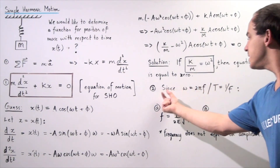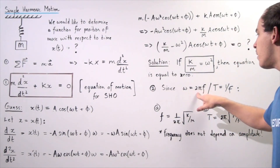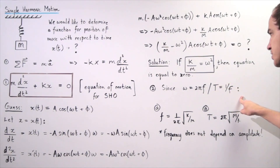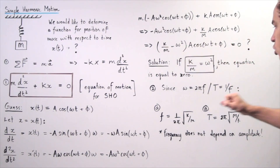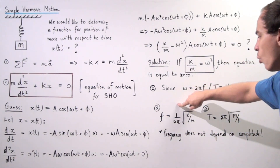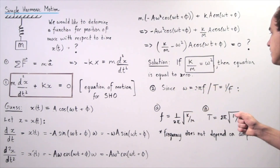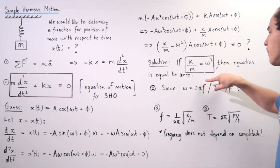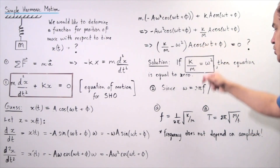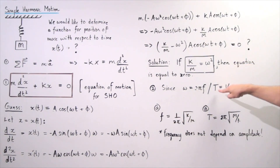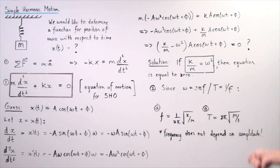Since ω equals 2π times frequency, and period equals one divided by frequency, we can derive that the frequency equals (1/2π)·√(k/m). Replacing frequency with one over period, we obtain that the period T equals 2π times the square root of mass divided by k.